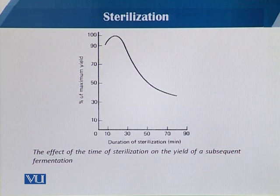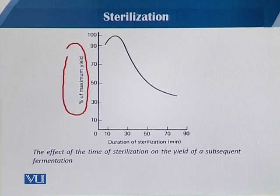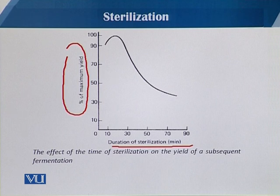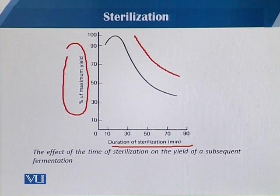Here you can see the percentage of maximum yield of our fermentation product plotted against the time of sterilization. As the time of sterilization at constant heat increases, there is a decrease in the percentage yield of the product.